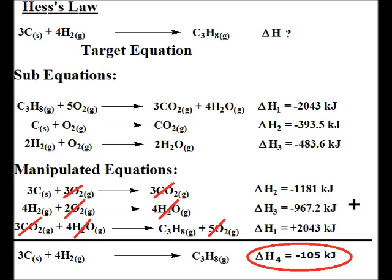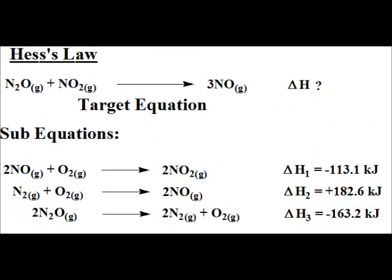If you're having trouble with this, rewind the video and look at each individual manipulation — the canceling, the multiplying through, and reversing the equation with a sign change. I'm going to flash a practice example up on the screen. Here is your target equation and here are the sub-equations to work with. Your job is to find the delta H of the target reaction by manipulating these however necessary. Go ahead and try this — pause the video, and we'll put the answer up in a minute.